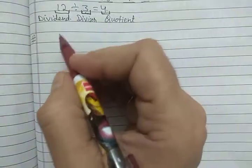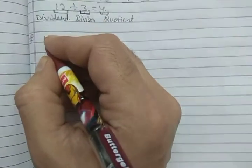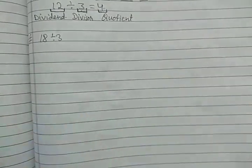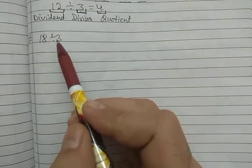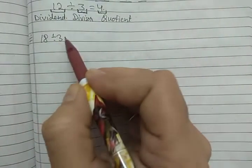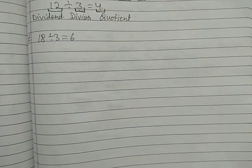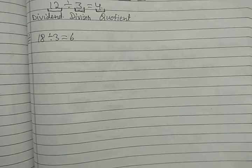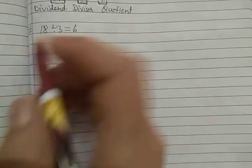Divide using the long division method. Suppose we have to divide 18 by 3. If we do it using the oral method — that means by using multiplication tables — we recite the table of 3 until we reach 18. So 3 sixes are 18. We write the result here: 3 sixes are 18. This is the oral method, or you can say by using the multiplication table.